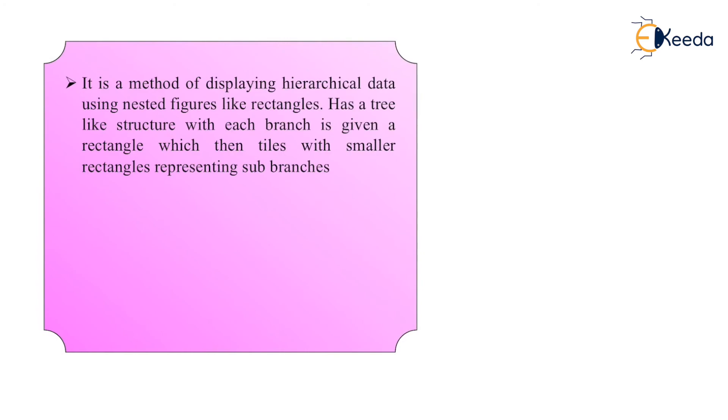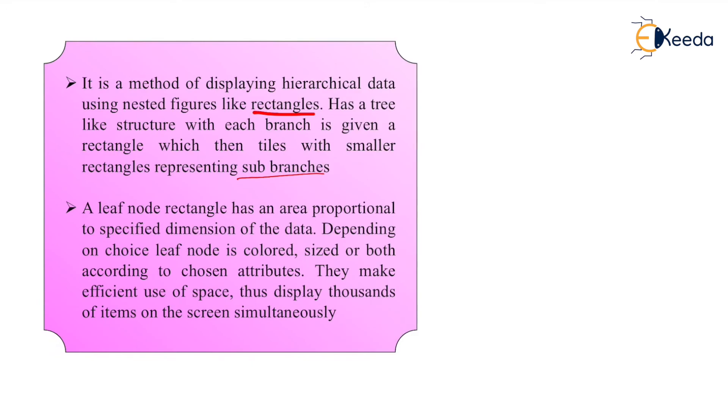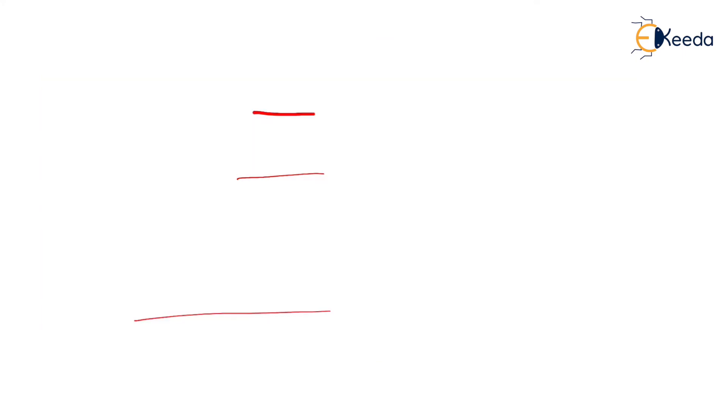It is a method of displaying the hierarchical data using nested figures like rectangles. It has a tree-like structure with each branch given a rectangle which then ties with smaller rectangles representing the sub-branches. A leaf node rectangle has an area proportional to the specified dimension of the data. Depending on choice, leaf nodes are colored, sized, or both according to the chosen attribute. They make efficient use of space, thus can display thousands of items on the screen simultaneously. We consider the tree map when we have a huge amount of data and you want to display in a hierarchical manner. That time we can go with tree maps.